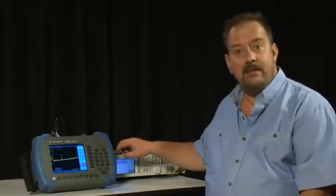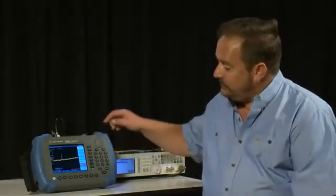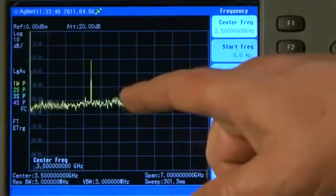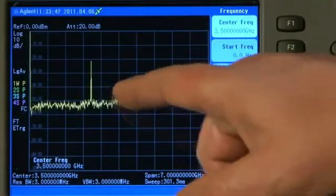Before we start making measurements of modulated carriers from transmitters, let's start off by making a few simple measurements from this MXG signal generator I have here, which is generating a 2.4GHz CW, in other words, unmodulated RF signal.